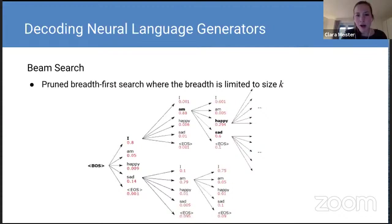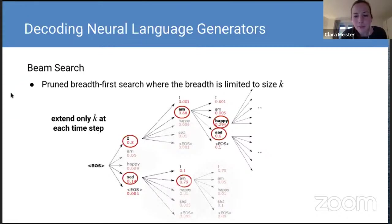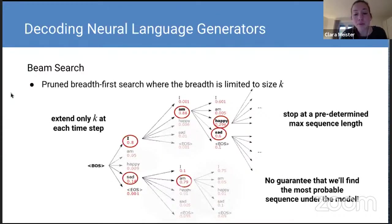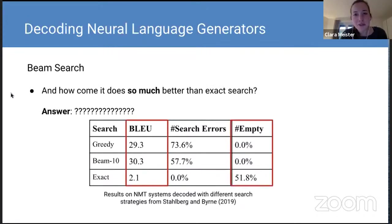You can see why we might not be able to find the most probable sequence: if we're only extending k paths at each time step, there might be some path we don't go down that, while at time step one it's not close to optimal, could later accumulate most of the probability mass and become the global optimum. That's the problem with beam search — it's just a heuristic, but it seems to be doing a lot better than exact search in terms of quality evaluation metrics.